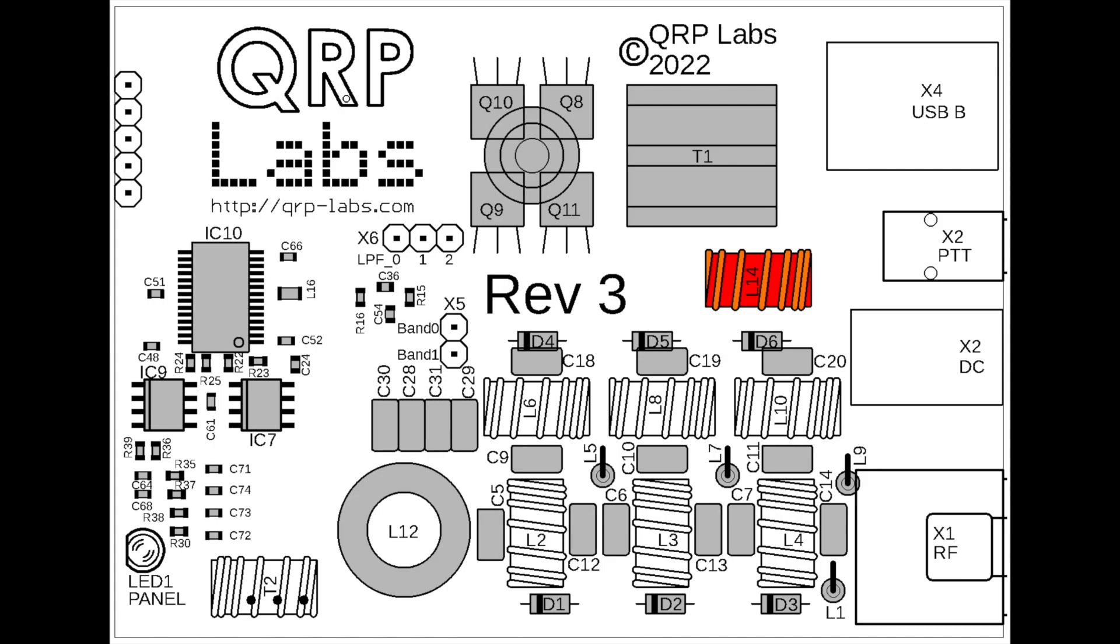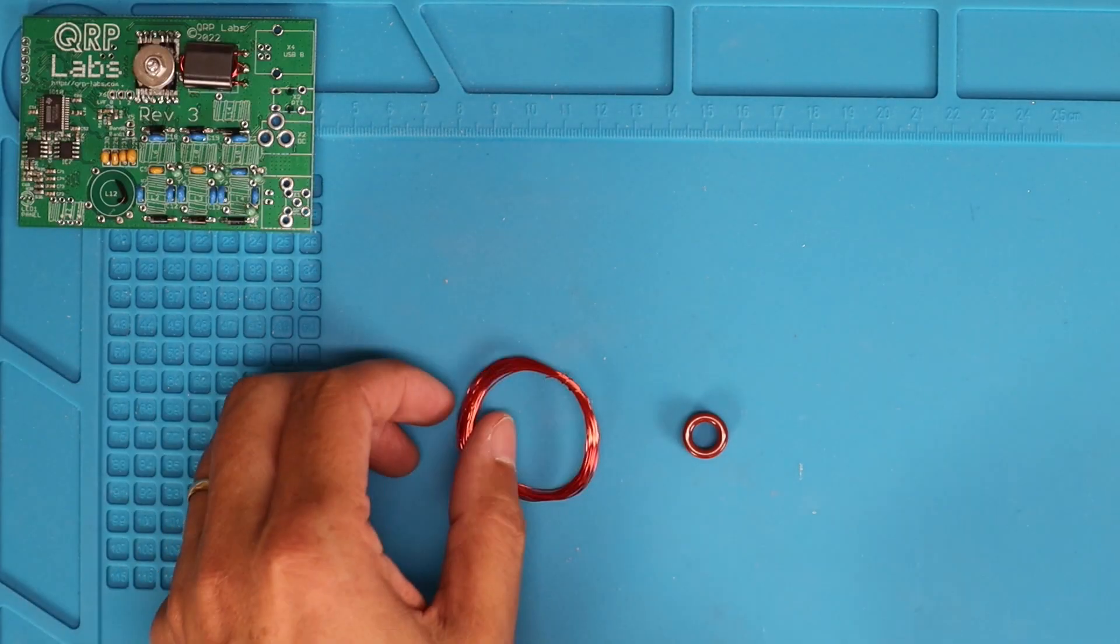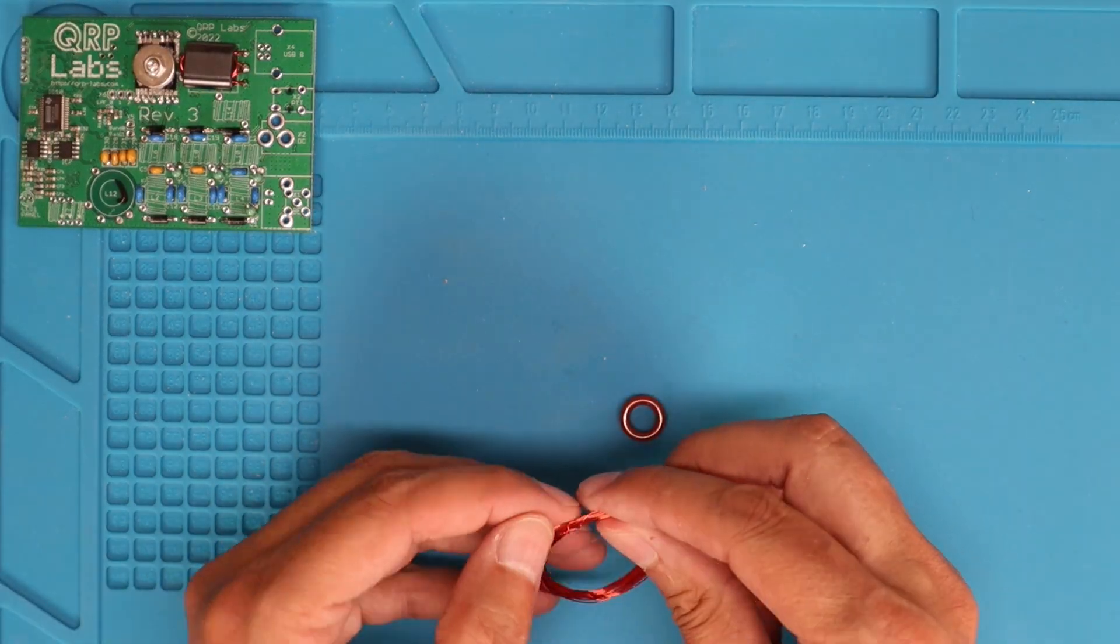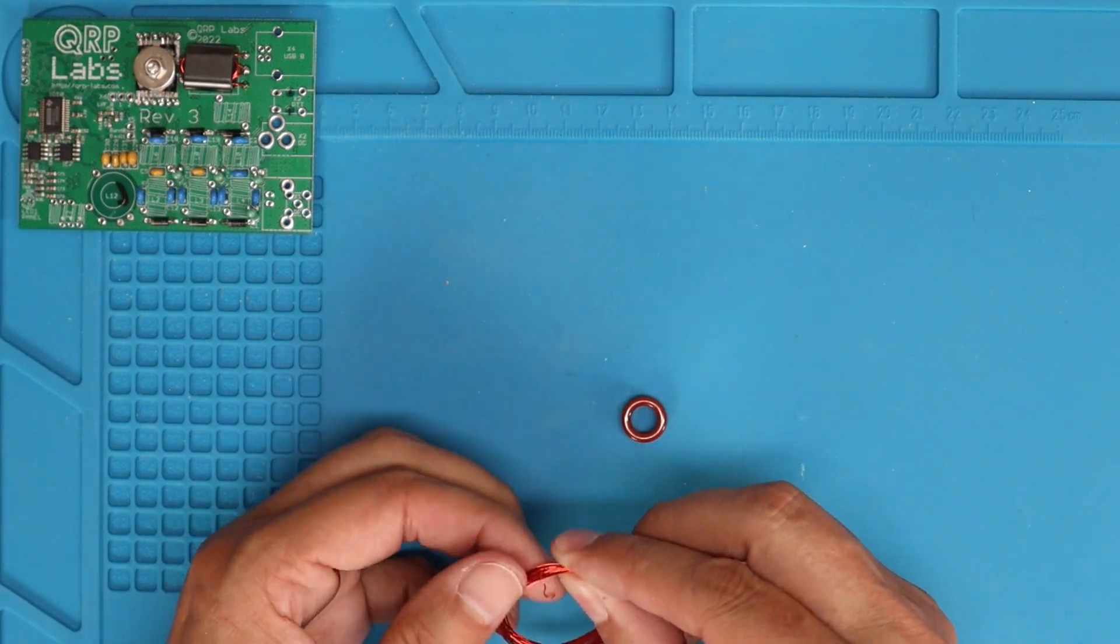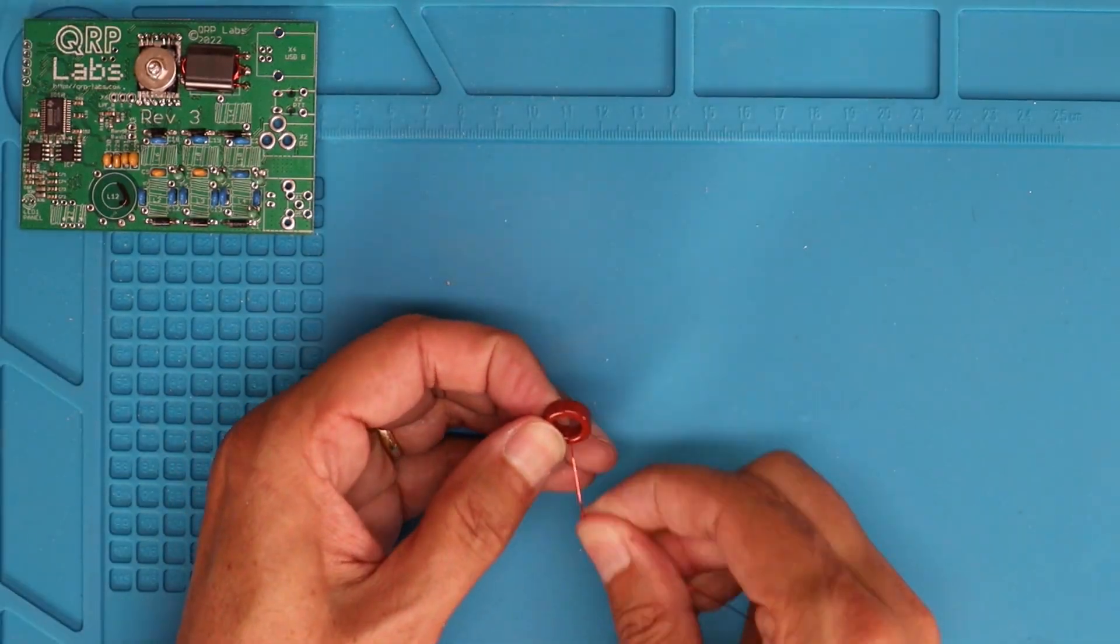So let's start by taking the 26 gauge magnet wire and the large red toroid and we are going to go ahead and wind L12.